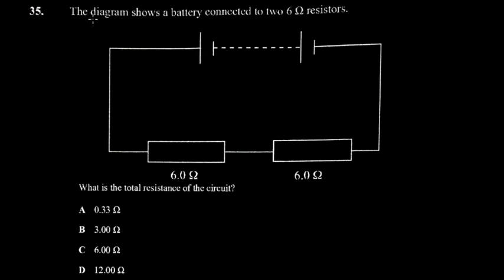Now on question 35, we have this diagram and the diagram shows a battery connected to two six ohm resistors. What is the total resistance of the circuit? These ones are in series. When resistors are in series, you simply add. So equivalent resistance (Req) here is equal to 6.0 ohm plus 6.0 ohm. So you'd actually get 12.0 ohm like this.